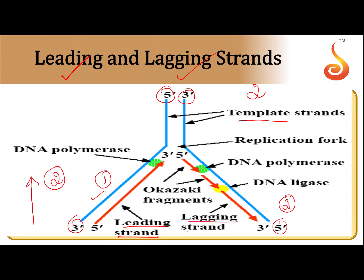The lagging strand is formed from the second parental strand. In the lagging strand, DNA replication occurs very slowly, and it occurs in the form of fragments. These fragments were noted by Okazaki, so we call them Okazaki fragments. All the Okazaki fragments are joined together with the help of DNA ligase.